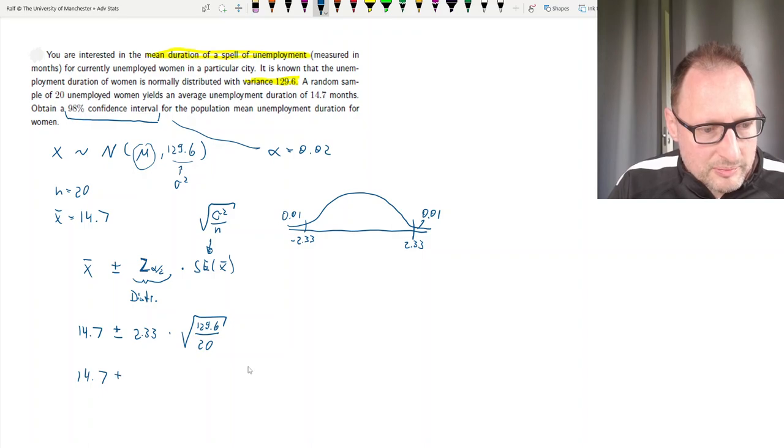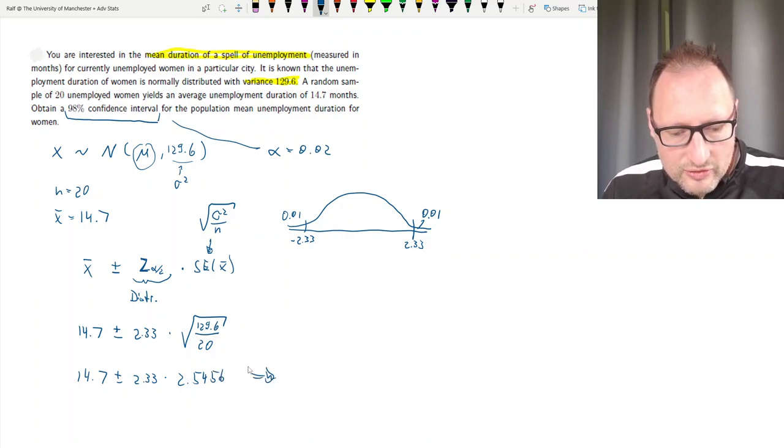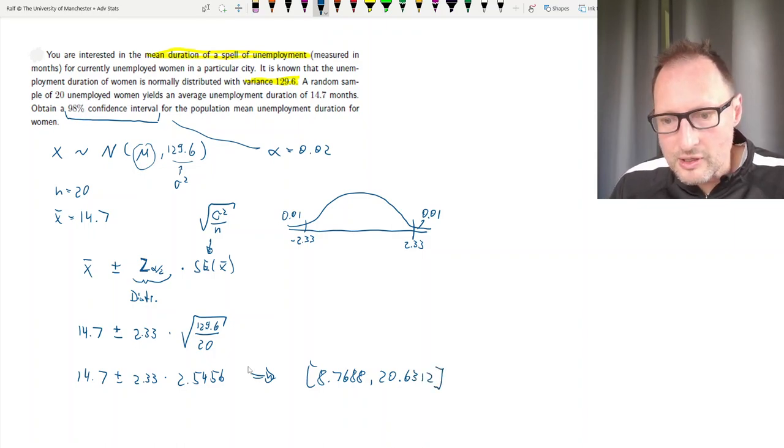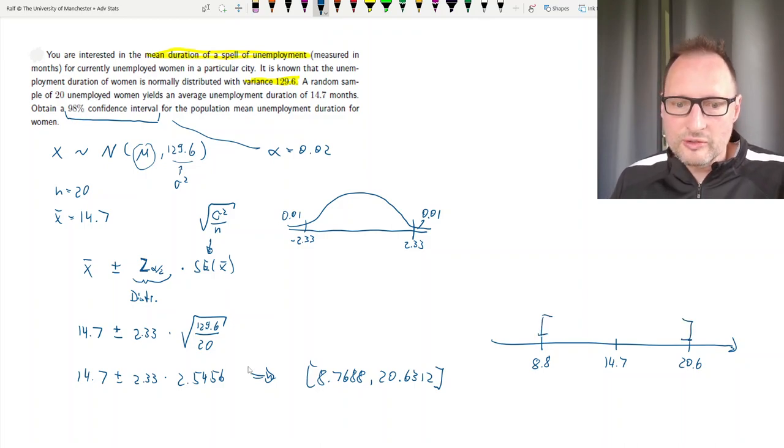This is 14.7 plus minus 2.33 times, if we calculate that, we get 2.5456. And that leads to a confidence interval of 8.7688 to 20.6312. So if you think about a line, our sample average was 14.7 and what we calculated is a confidence interval here. So this is our 98% confidence interval.